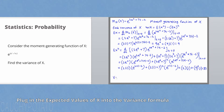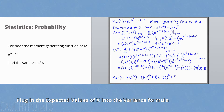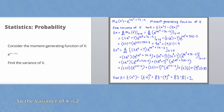Now that we have the expected values needed for the variance formula, plug it all in. Variance of x equals the expected value of x squared minus the expected value of x, outside squared, equals 83 minus 9 squared, equals 83 minus 81, equals 2. And that's it — hope this video helps, thanks for watching.